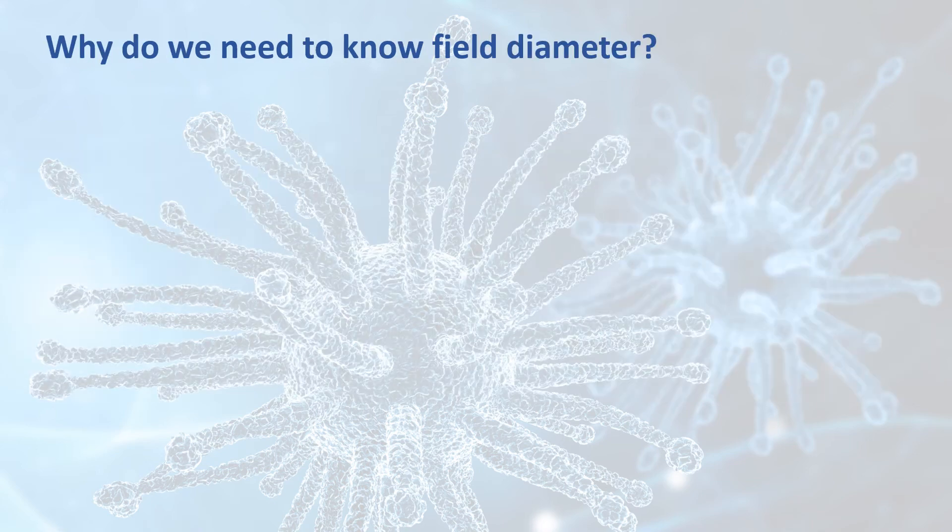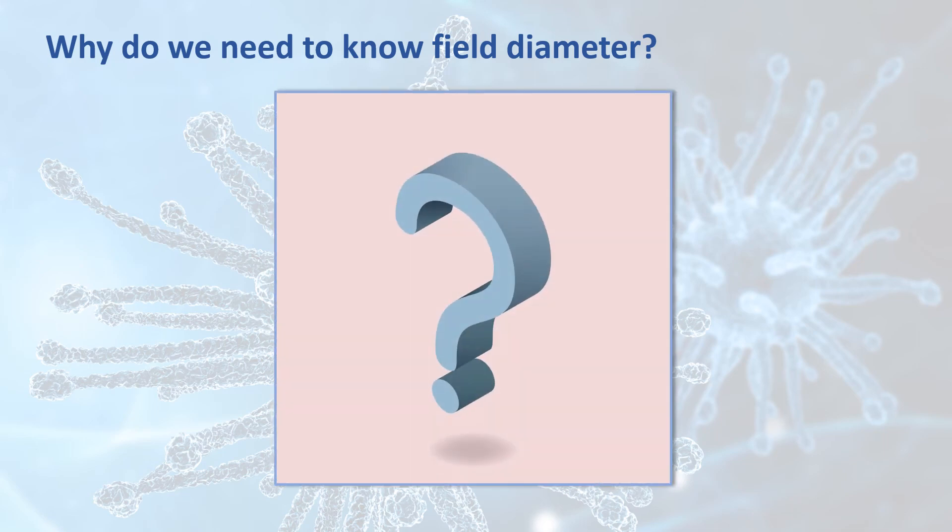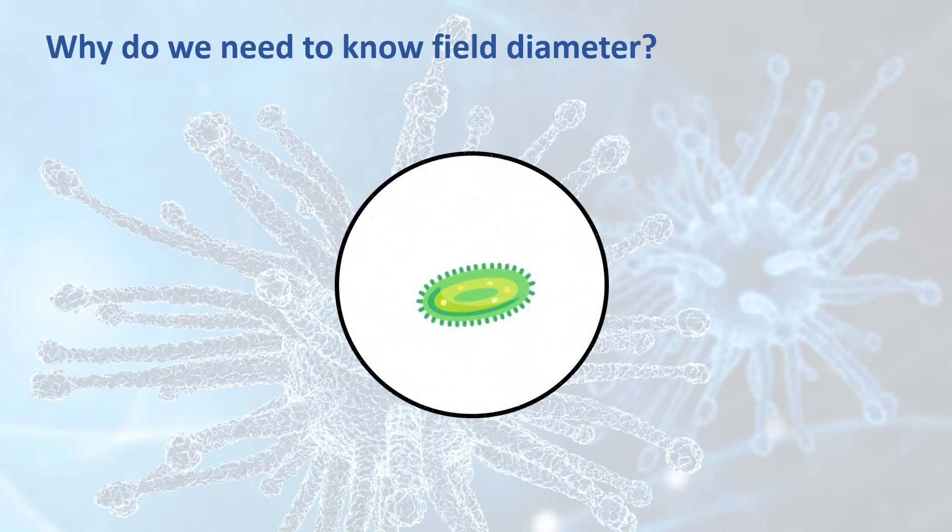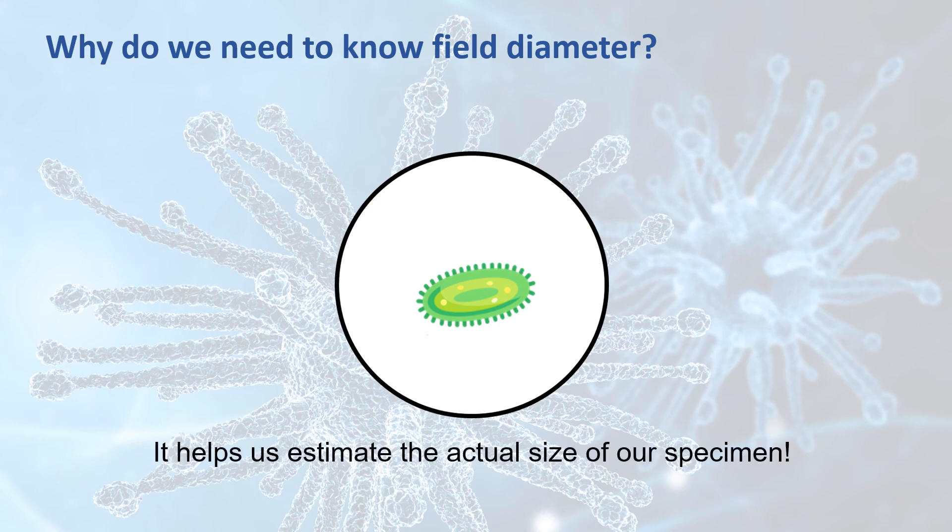Now, I know at this point, many of you are wondering, why do we even need to know about field diameter? Well, it turns out that knowing your field diameter can be quite useful. Imagine, for example, that you're looking through the ocular lens of a compound light microscope, and you see this particular specimen. Remember, this image has been enlarged, so what you're seeing looks much larger than the specimen actually is in the real world. Well, knowing the field diameter helps us out because it helps us estimate the actual size of our specimen in the real world.